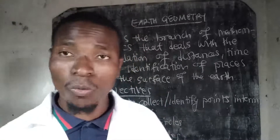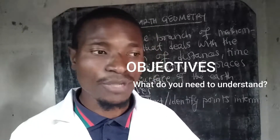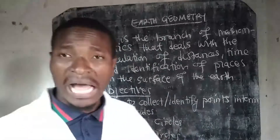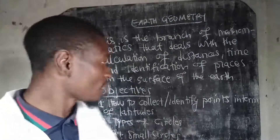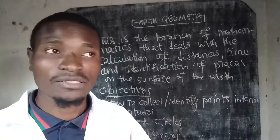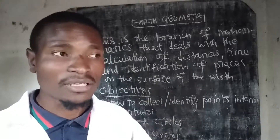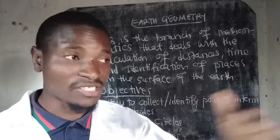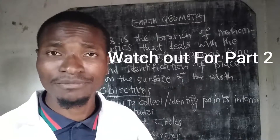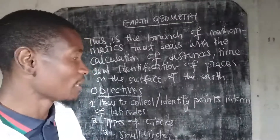So what are the objectives of this course? At the end of this topic you should be able to identify and locate points on the surface of the Earth in terms of latitude and longitude. That is the cardinal first objective — understanding how to identify a point using latitude and longitude.